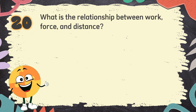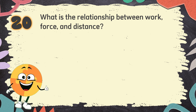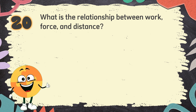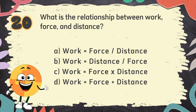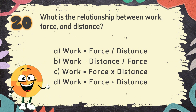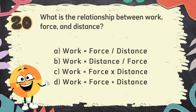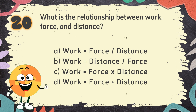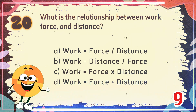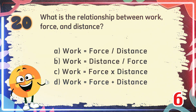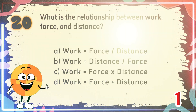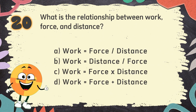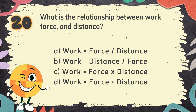Number 20. What is the relationship between work, force, and distance? The choices are: A. Work equals force divided by distance, B. Work equals distance divided by force, C. Work equals force multiplied by distance, D. Work equals force plus distance. The correct answer is C. Work equals force multiplied by distance.